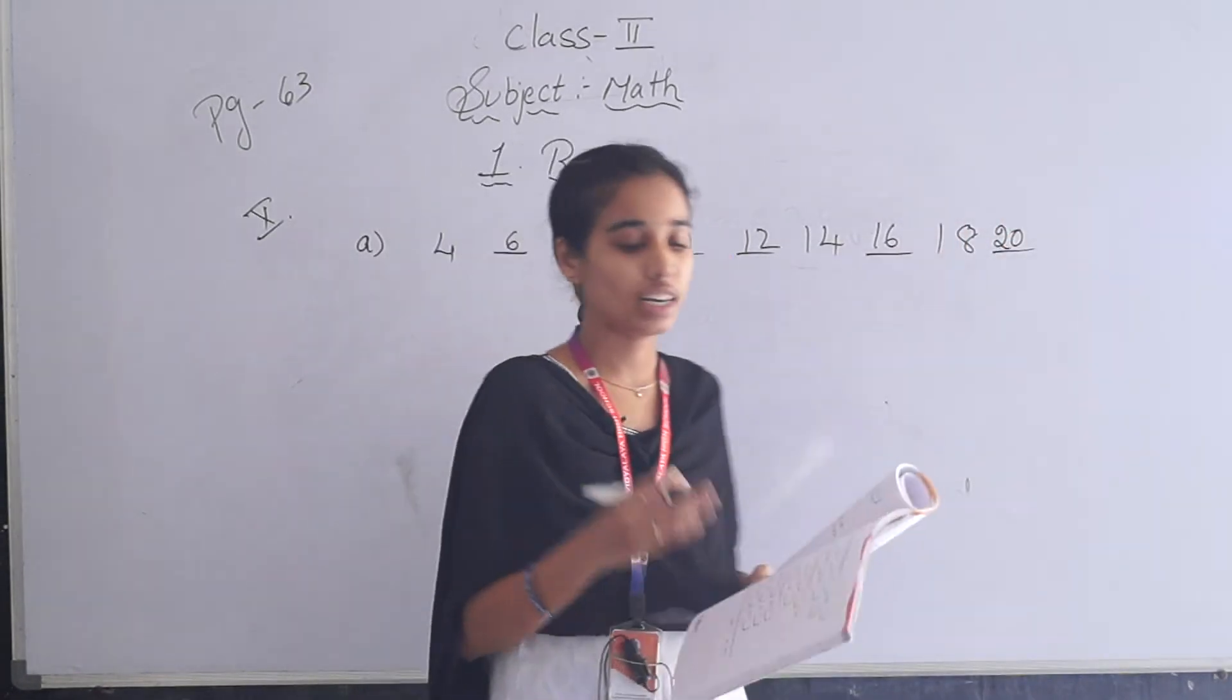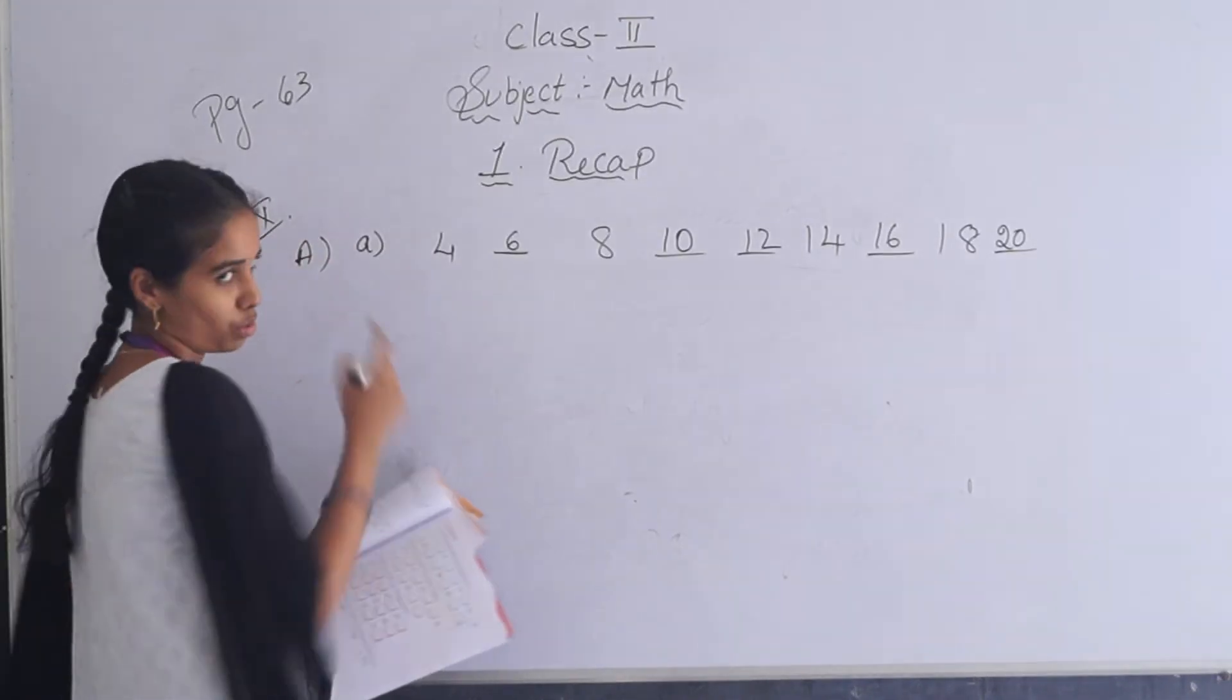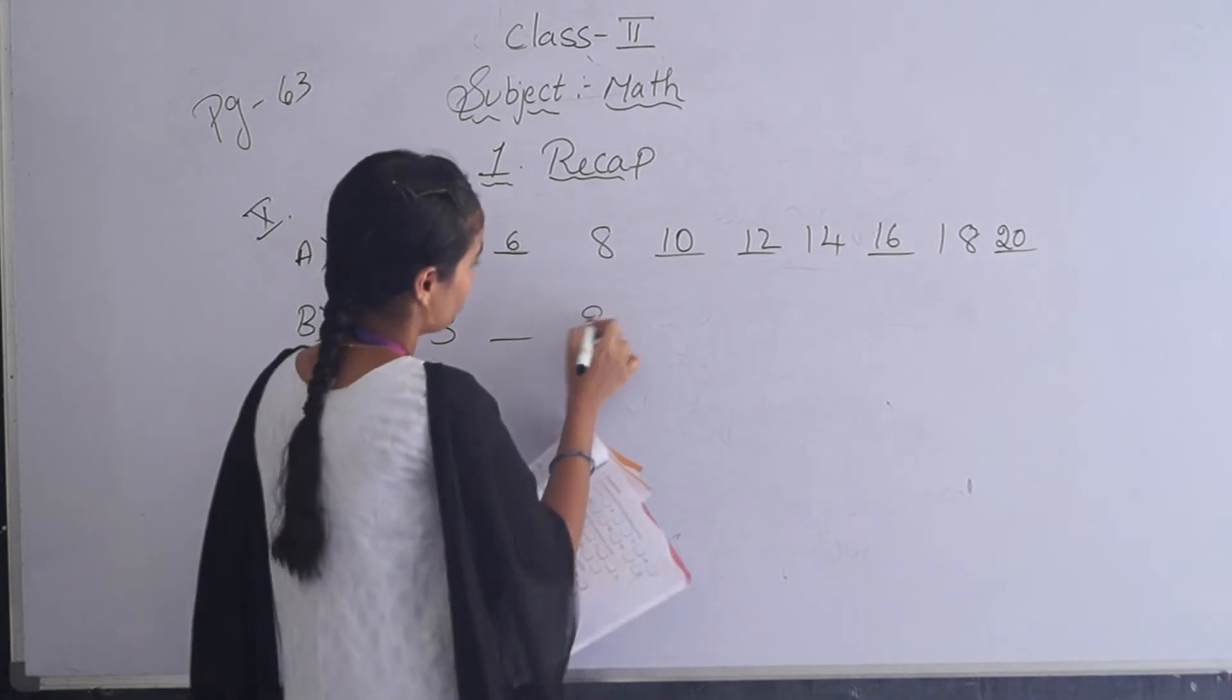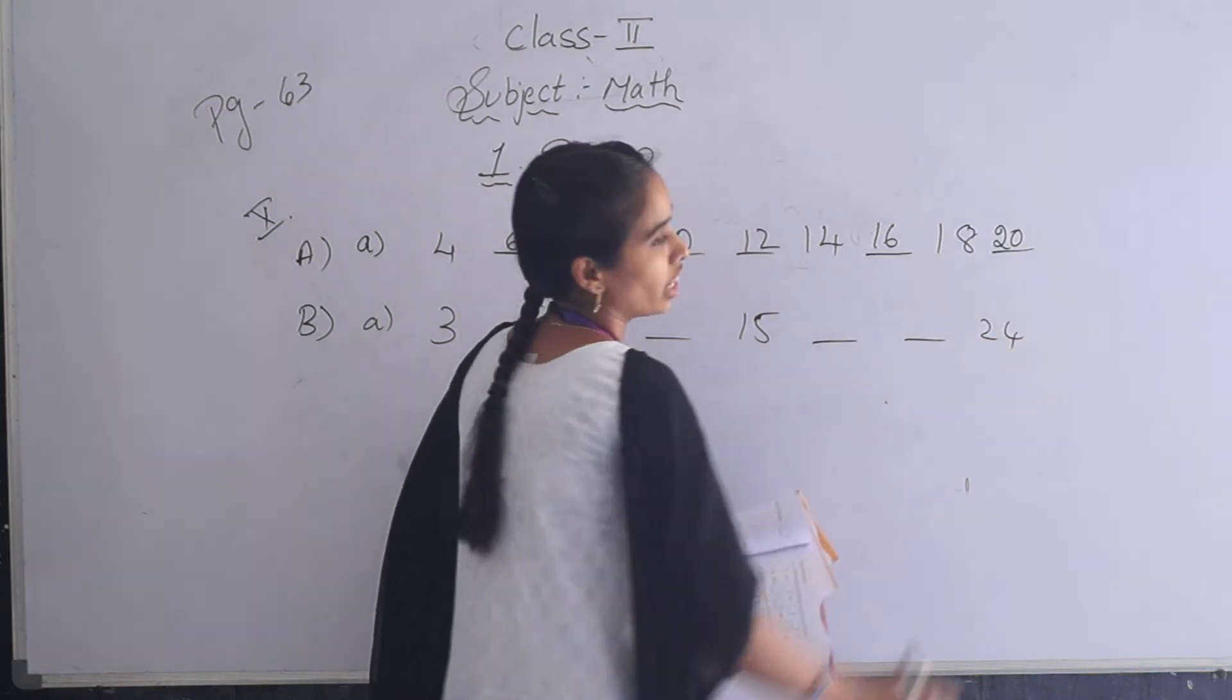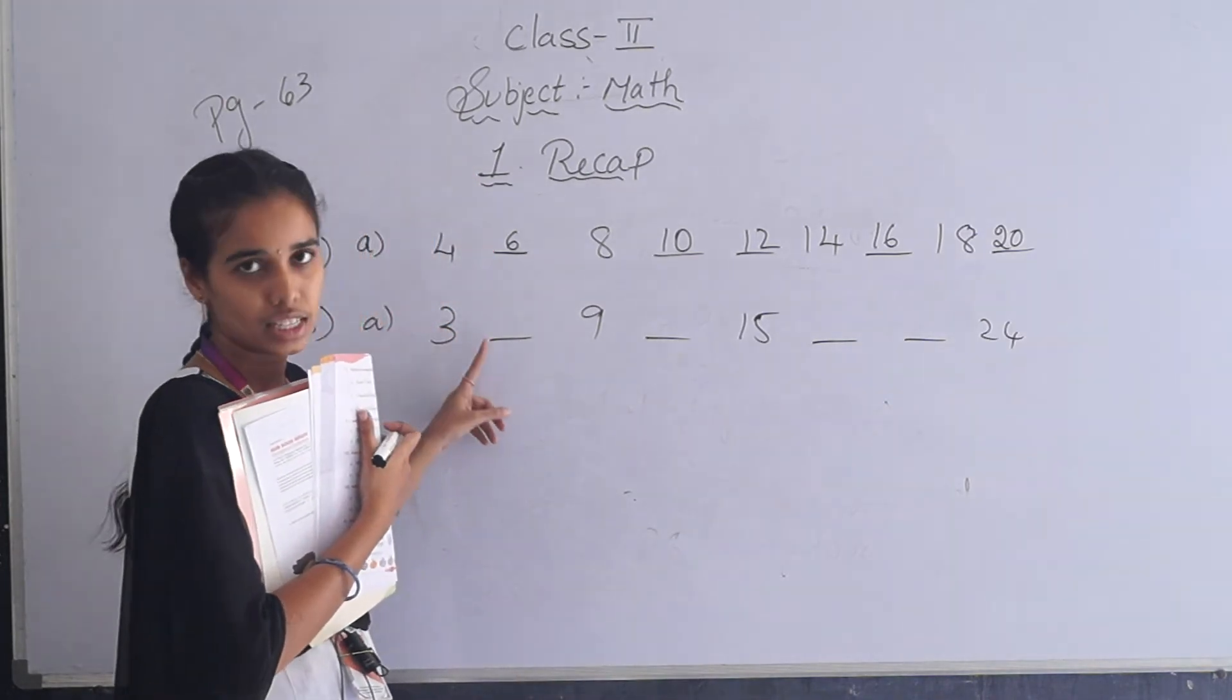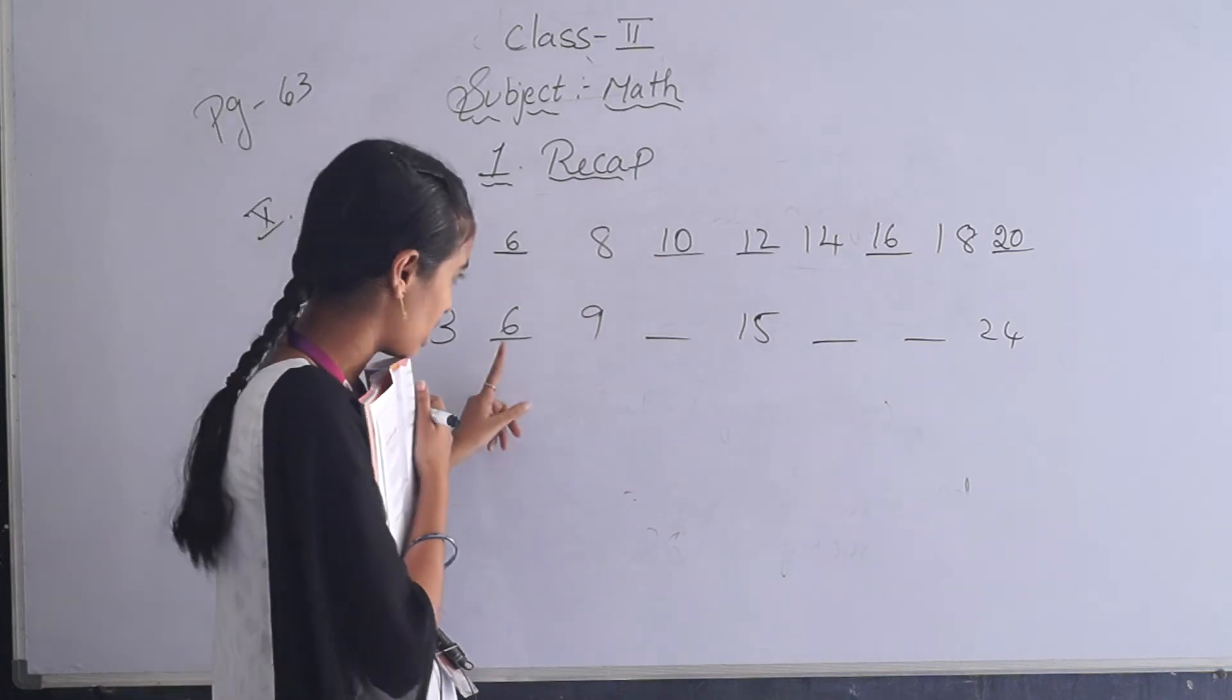Next, in B they give in. You have to add 3 to each and every number. This one is A. Next one you have to do at home. I am telling B1. In B first one: 3, blank, 9, blank, 15, 24. Here they are asking count in 3s, so that means you have to add 3 to this number. 3 plus 3 is 6. Open 3 fingers, count after 3: 4, 5, 6. So answer is 6.